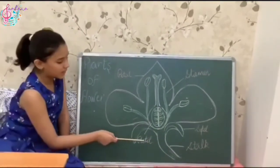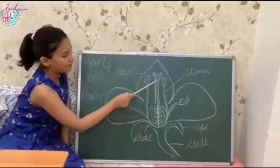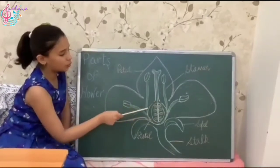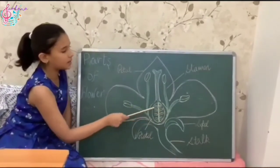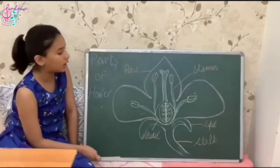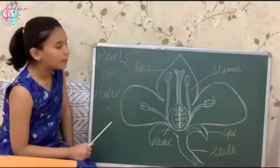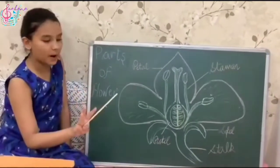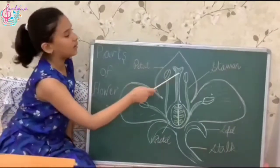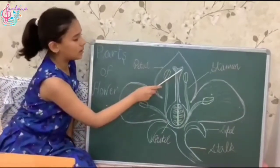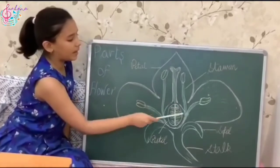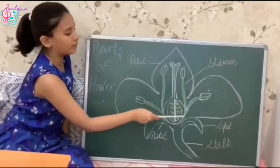This is the pistil. It contains ovary and is the female part of the flower. Pistil contains three parts: stigma, style, and ovary.